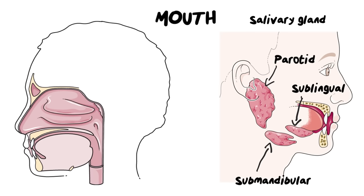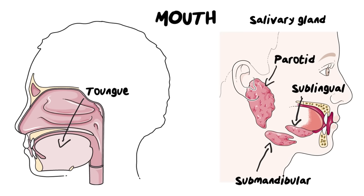All three pairs secrete saliva, and remember saliva contains an enzyme which assists with digestion. Now while we're busy chewing using our teeth, we need something else to help move all of our food around. That's our tongue. The tongue is there to swish, mix, and move your food, and eventually form it into what we call a bolus — a ball of food that we're now going to swallow.